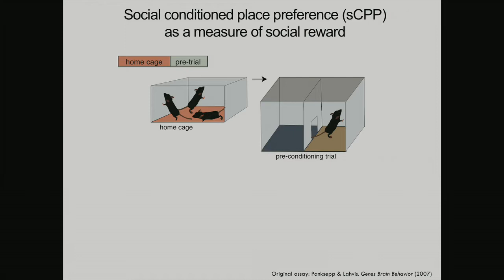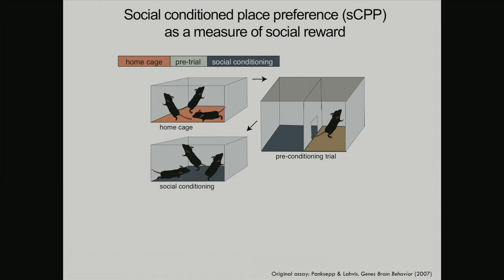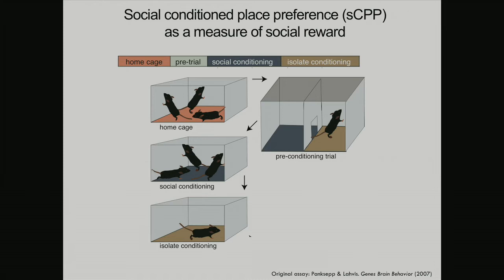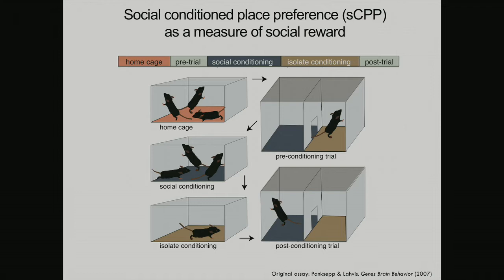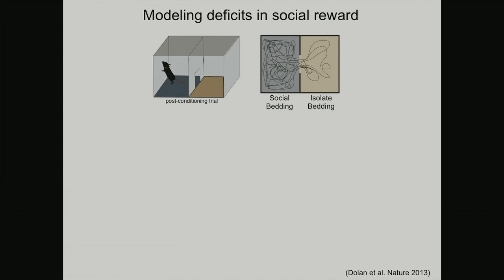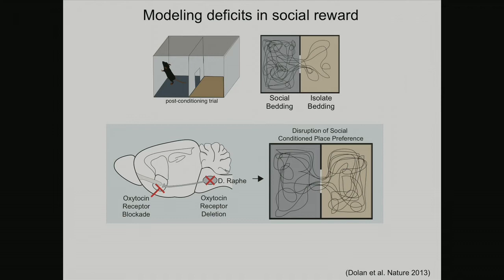We used a conditioned place preference assay from the drug literature. The simplest description: if you're put in a room with a party and then a room that's isolated and miserable, you'll later choose the room associated with positive memories. For mice, we put them together with one type of bedding, then alone with another type of bedding — each for 24 hours — and then let them choose. More time on the social-cue side indicates a social preference.